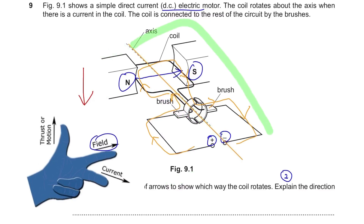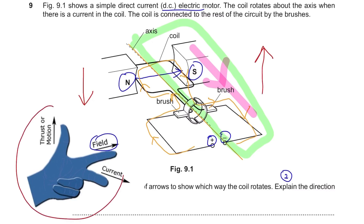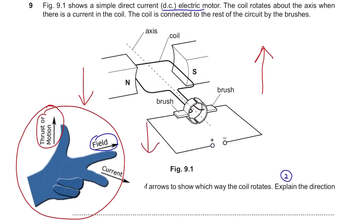Now for the right side: the direction of the magnetic field is still from left to right, from north to south pole. However, the direction of the current is changed — it's coming from the magnet towards the circuit, so it's in the opposite direction. Using your fingers again, you find that the motion is towards the top — an upward motion. From these two arrows, the left side is going down and the right side is going up, which means the coil rotates in the anti-clockwise direction.